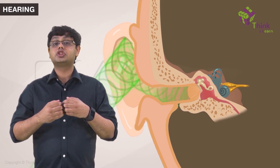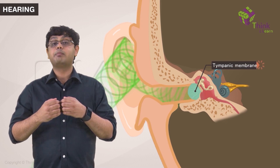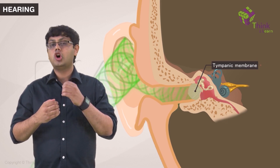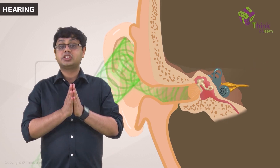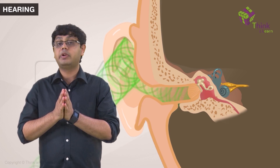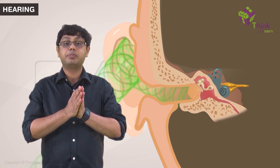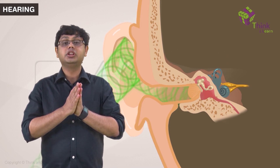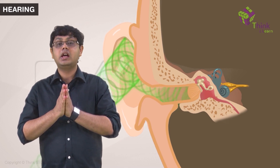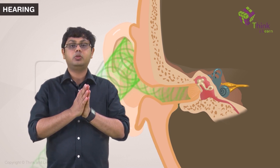It passes through the canal where it hits the tympanic membrane or eardrum. The sound waves cause the tympanic membrane to vibrate, with the compressions pushing the membrane in and rarefactions pulling it out.